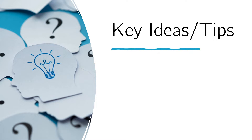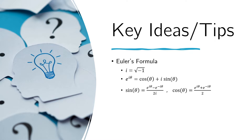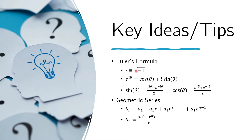Let us recall two important formulas. First is Euler's formula. If we set i equal to the square root of negative 1, then e to the i times theta equals cosine of theta plus i sine of theta. This is useful because it relates the exponential function to the trigonometric functions. If we substitute negative theta and add e to the i-theta and e to the negative i-theta, then divide by 2, we get cosine theta. Similarly, if we subtract and divide by 2i, we get sine of theta.